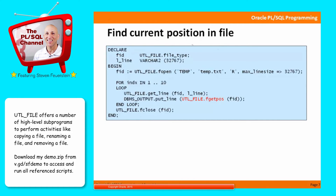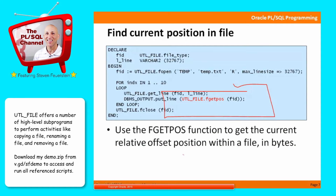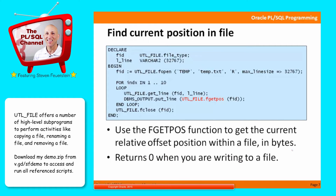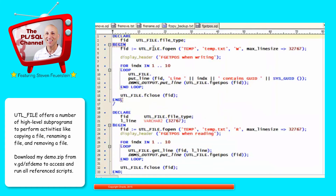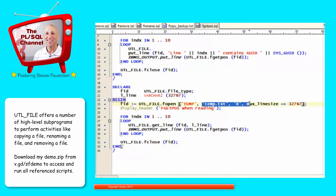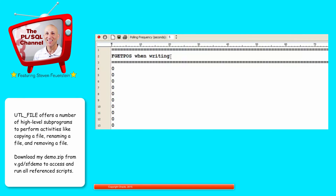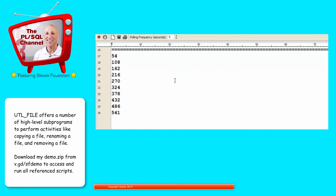Finding the current position in the file. UTL_FILE.FGETPOS takes the file handle and tells you where you are in the current file. It's a relative offset from the beginning of the file in bytes, not from the current line, and it returns zero when you're writing to a file — so this position is only useful when reading. I'll open my file for write, put a line into the file, ask where I am — and you'll see it's always zero. Then I'll read from that same file and for the first ten lines I'll get each line and ask what's the position. Running my code: for writing, position is always zero; for reading, it tells me how far I am along in my file.